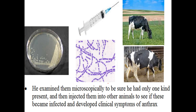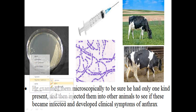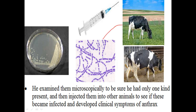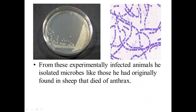After growing the bacteria, he examined them microscopically to be sure that he had only one kind of microorganism. Then he injected this bacteria into the experimental cattle and observed whether the cattle became diseased or not, recording the clinical signs and symptoms after inoculation of the microorganisms.